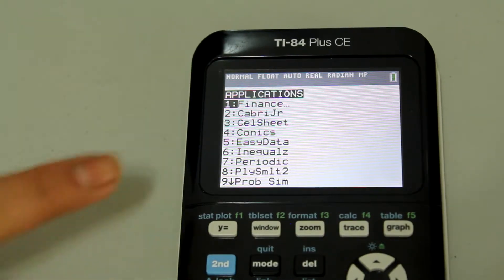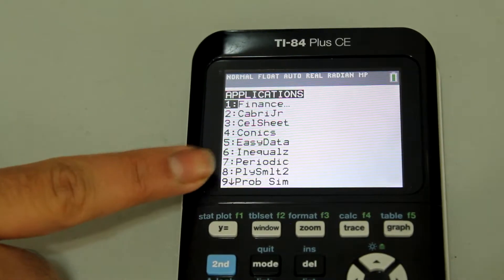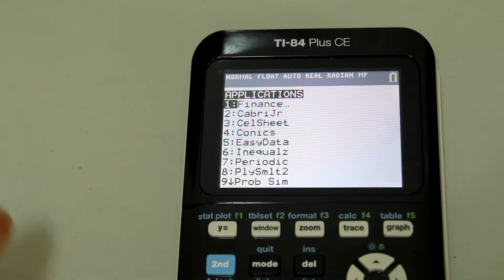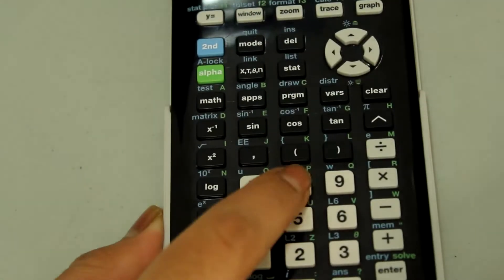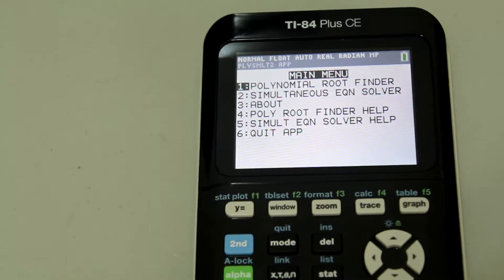And you're going to either arrow down to number 8 that says PLY SNLT2 or you can just hit the number 8 button. And once you hit the number 8 button, it will select that option.